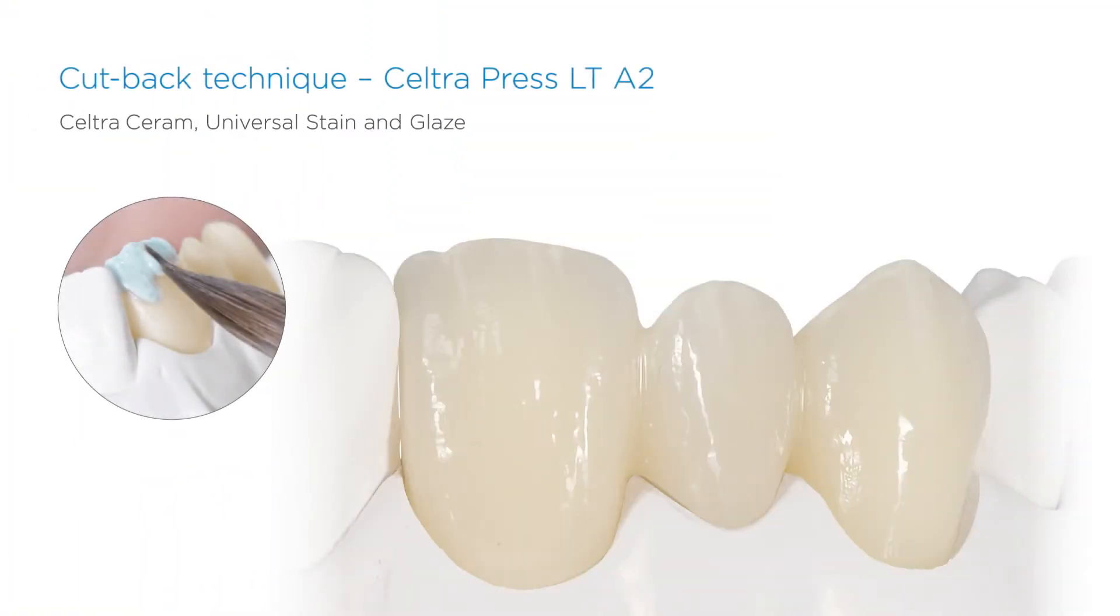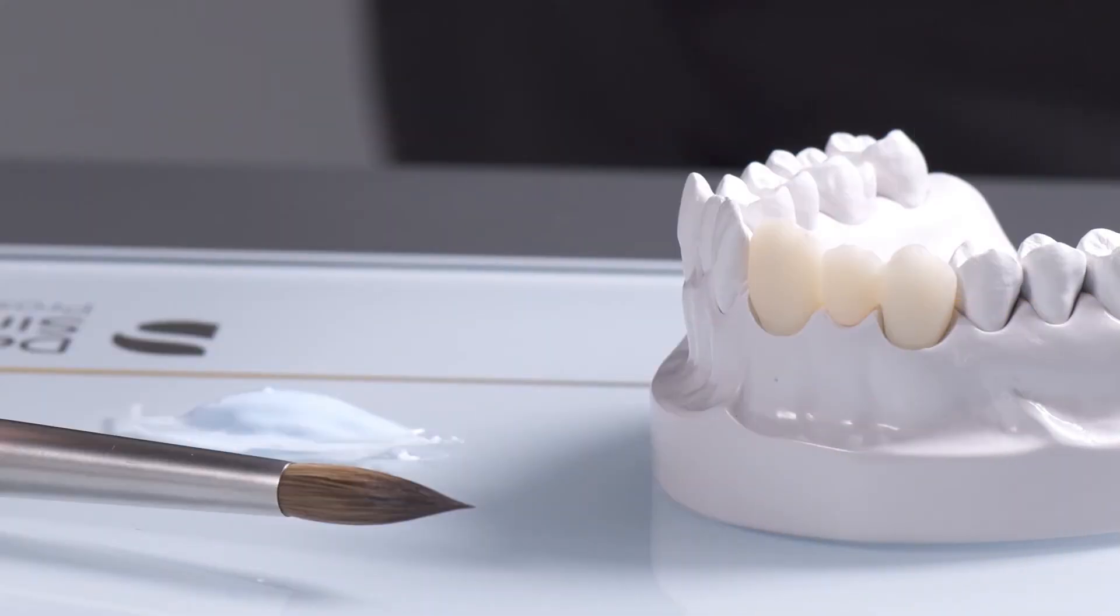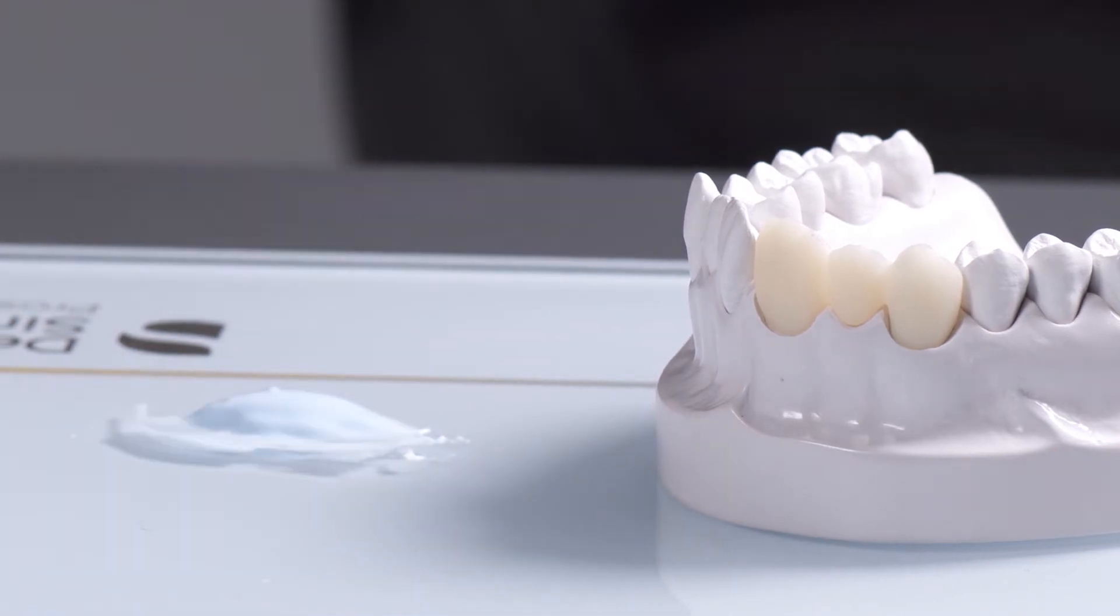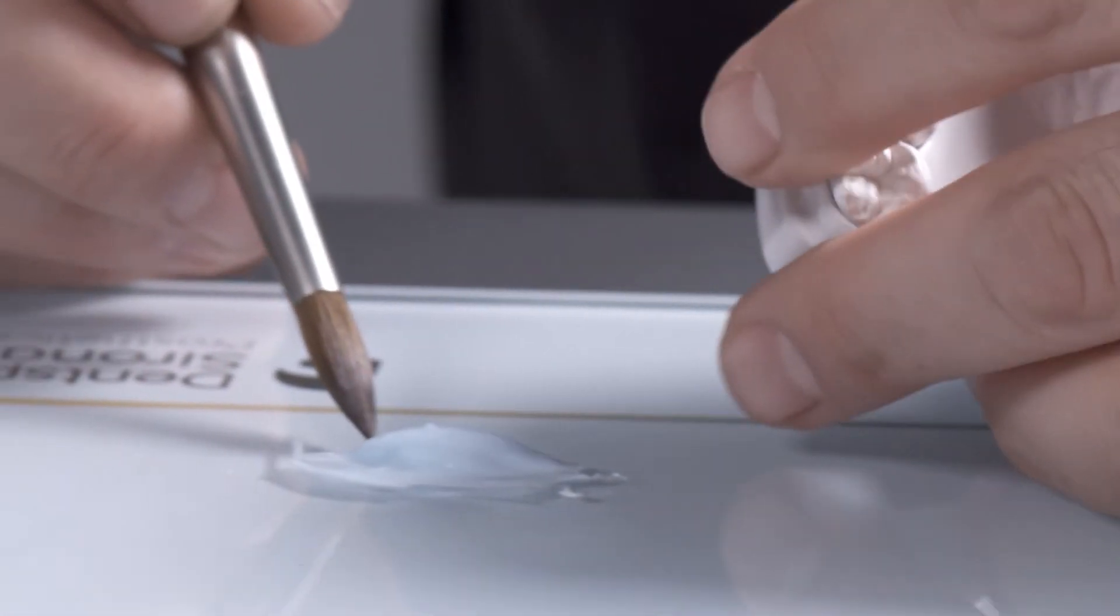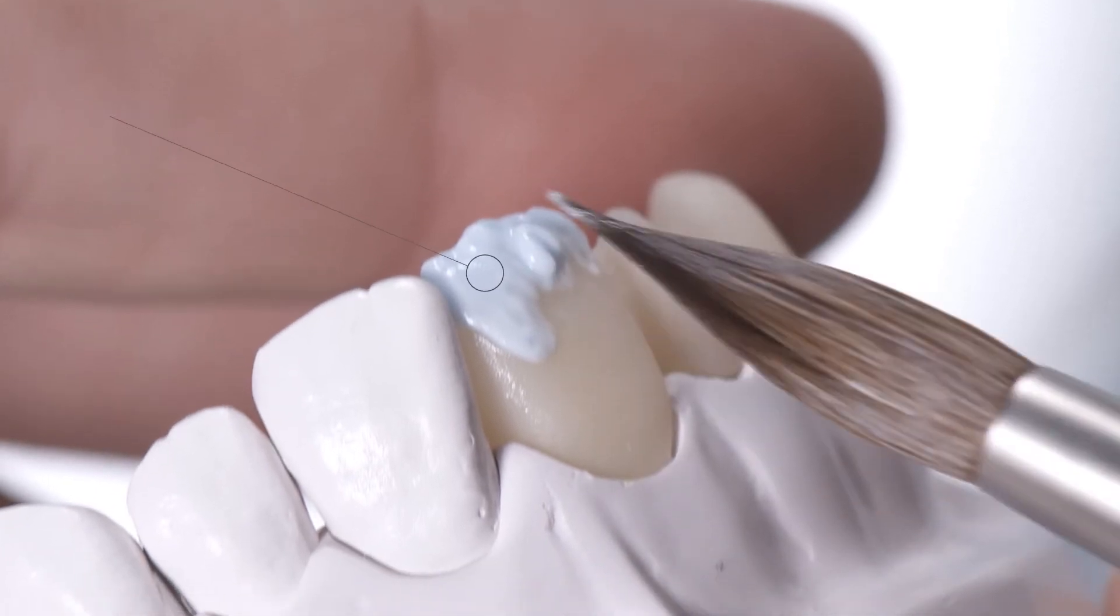Seltra Press already provides a high level of aesthetics in monolithic mode. Using the cutback technique with just a single incisal material, this aesthetic result can be further enhanced. For this, we use Seltra Ceram Enamel E1. The mamlon structures were created when designing the framework.